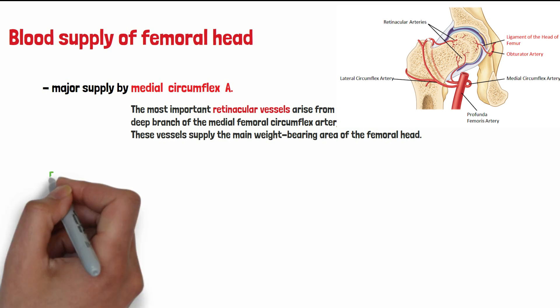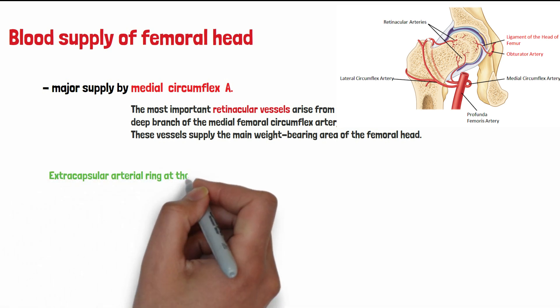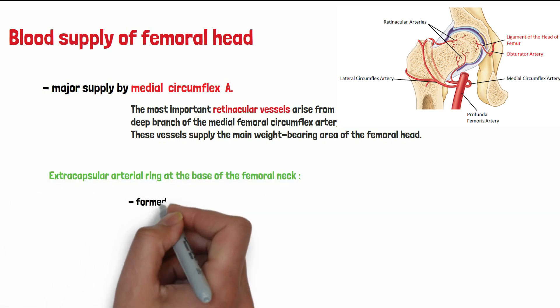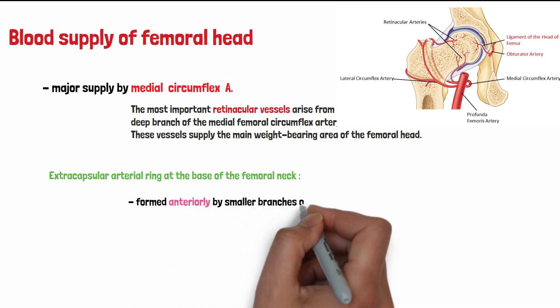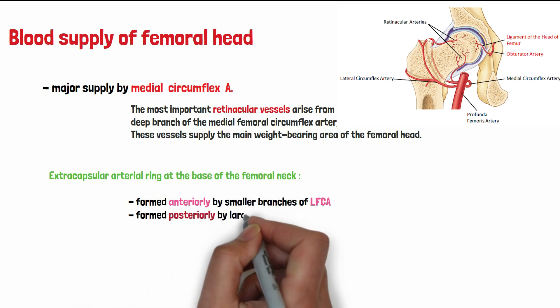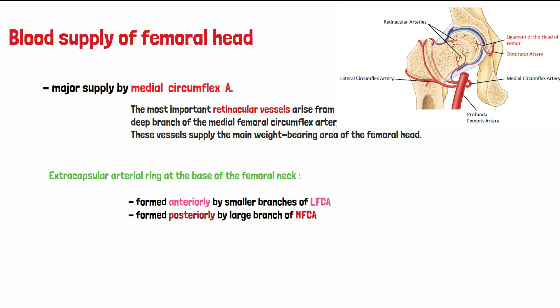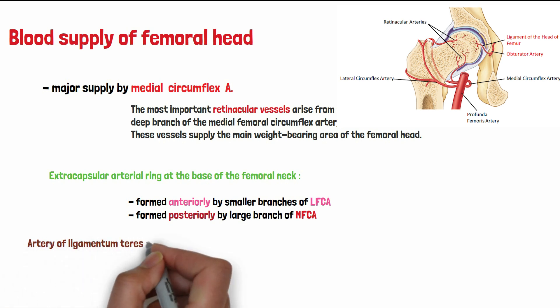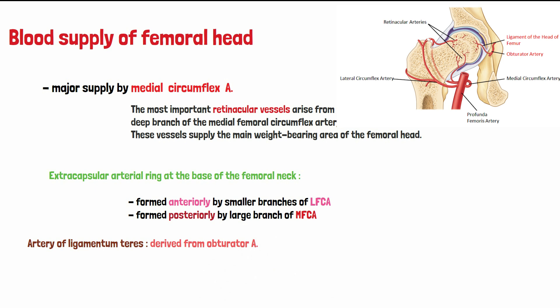Most of the femoral head blood supply is provided by the extracapsular arterial ring, formed by the lateral femoral circumflex artery anteriorly and the medial femoral circumflex artery posteriorly. The other important vessel is the foveolar artery, derived from the obturator artery, also called the artery of ligamentum teres. So the two important arteries are the femoral artery and the obturator artery.